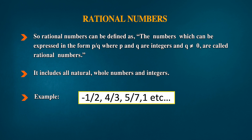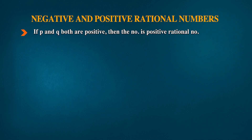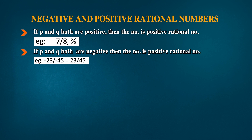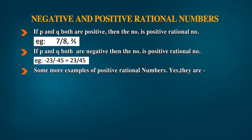If p and q both are positive, the number is a positive rational number. For example, 7/8 and 2/3. More examples: 2/3, 4/5, 9/5, 7/9, etc. If p and q both are negative, the number is still a positive rational number. For example, -23/-45 gives us 23/45, which is positive. More examples: -2/-3, -4/-5, -9/-5, -7/-9, and many more.